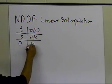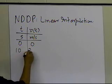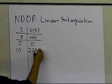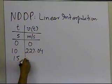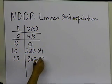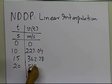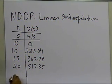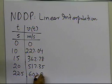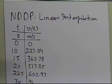The data is: at t=0, v=0; at t=10, v=227.04; at t=15, v=362.78; at t=20, v=517.35; at t=22.5, v=602.97; and at t=30, v=901.67.